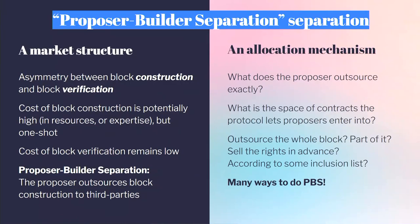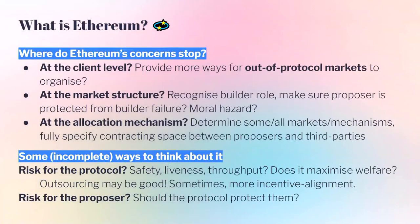Being more precise about where we draw the protocol boundary: we could recognize that there are builders — third parties who allow the system to have efficient blocks and better economic use of resources. A step beyond that is fully specifying the space of contracts that proposers and builders enter into. When designing PBS, we can ask: is it a whole-block auction? Do we let the proposer make part of the block and auction the rest? Do we sell block-making rights in advance? Do we have an inclusion list for censorship resistance? There are many design parameters the protocol can add to this allocation mechanism.